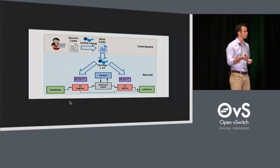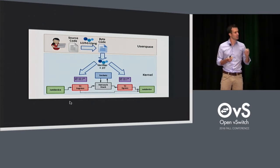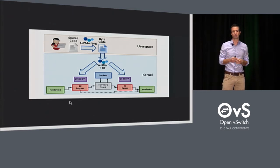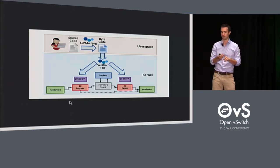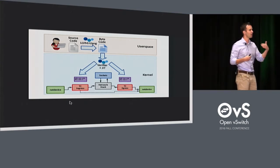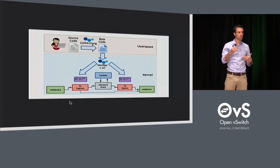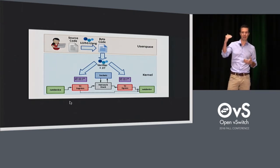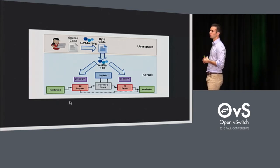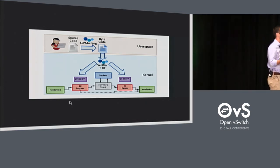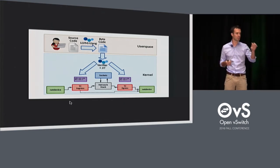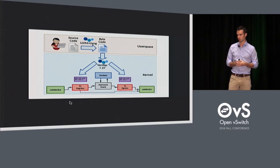The BPF verifier will ensure that you cannot do such things. It verifies by walking through all possible branches in your bytecode, verifying that each and every branch does not access any memory that has not been set to zero. It will ensure that you're not looping — you can jump backwards but you cannot create loops. It will also ensure that you're not referencing memory with invalid pointers. So the verifier ensures that whatever bytecode you load, it's impossible to crash the kernel.